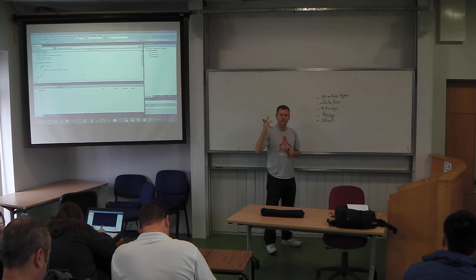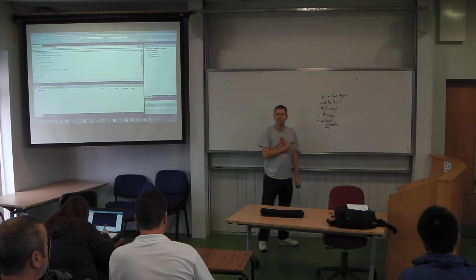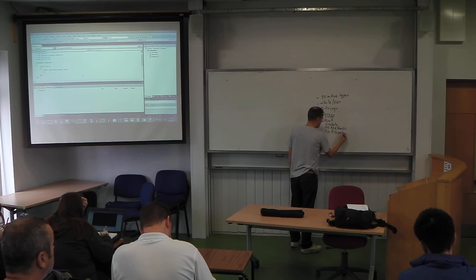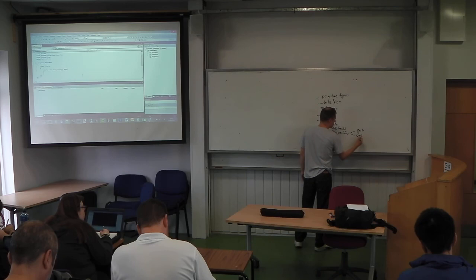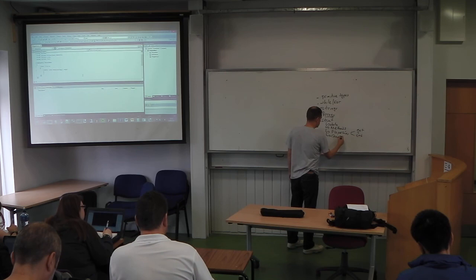Structs in C# are quite different to structs in C. A struct in C is basically a collection of data, whereas a struct in C# is a collection of data plus all the things you can do with that data — methods. There are also special types of methods called properties: get properties and set properties, which are read-only and read-write properties. We'll also look at constructors.